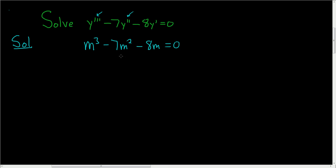To solve this, we can factor out an m, so m parentheses, m squared, minus 7m, and then minus 8. And this is equal to 0.